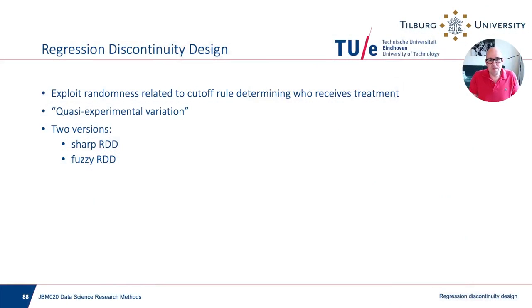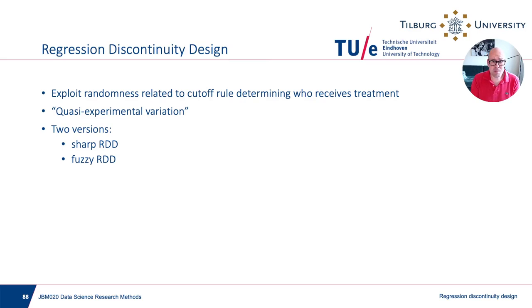Welcome to this video on the regression discontinuity design. What is the regression discontinuity design? Suppose you want to estimate treatment effects and you're not in the lucky situation in which treatment assignment is random. The regression discontinuity design is a situation in which you can nevertheless estimate treatment effects if certain conditions hold, by exploiting randomness related to a cutoff rule determining who receives treatment.